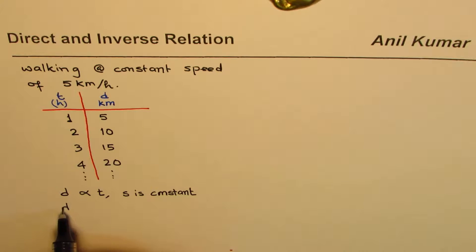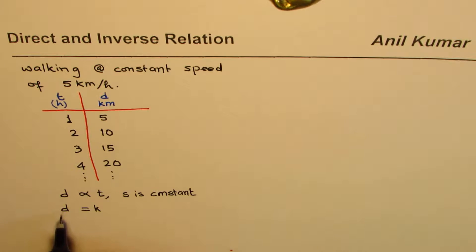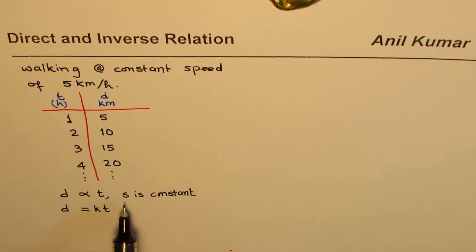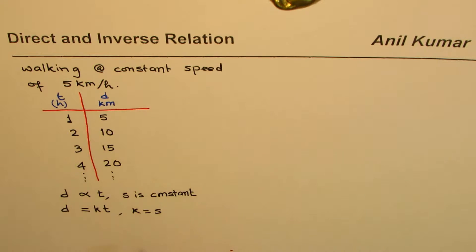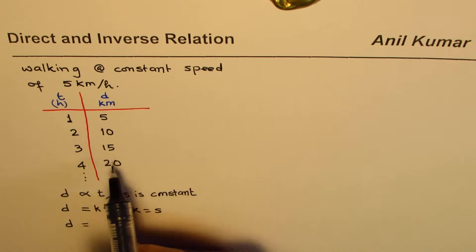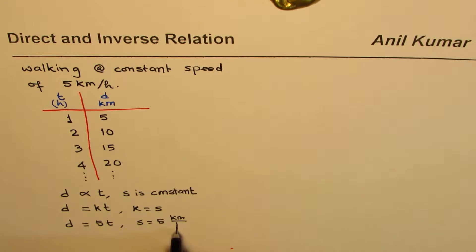The proportionality sign is replaced by a constant. In this case, our constant is speed. Generally we write constant K, and we replace proportionality with an equal sign to make a formula: distance is equal to K times time. Since we used S as our constant speed, K equals S. So we derive the formula, and in our case speed is 5 kilometers per hour, so distance and time are related by D = 5T, where speed is 5 kilometers per hour.